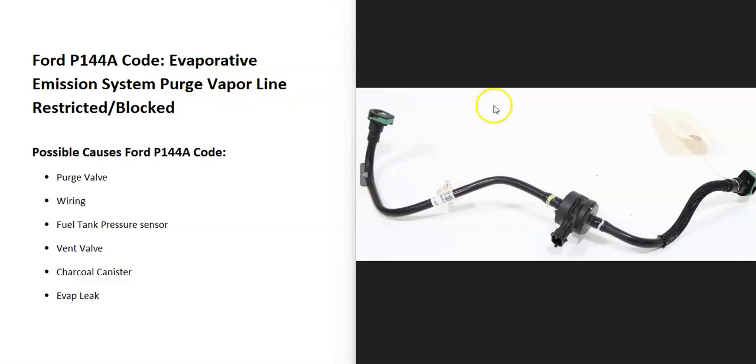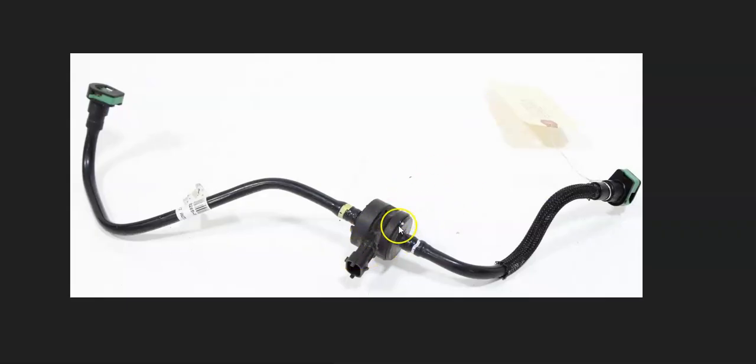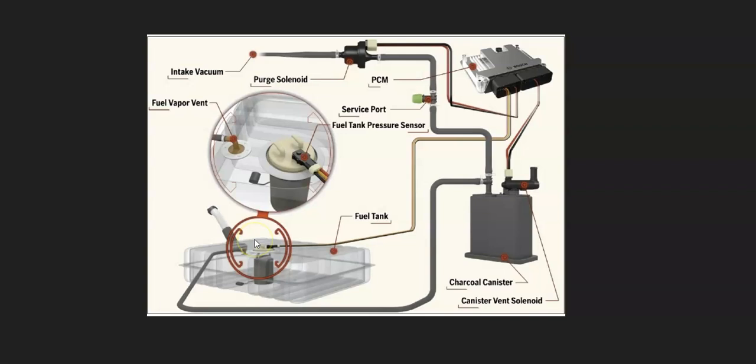When you get this code, the onboard computer is seeing something's going on with the purge valve. The EVAP system has a hose that leaves the gas tank and goes up to a charcoal canister which stores the vapors. It also has a vapor vent valve solenoid on it that the onboard computer uses to test the system.